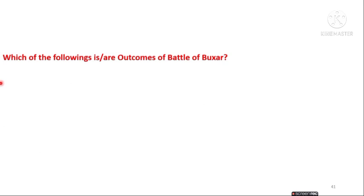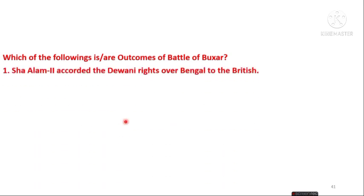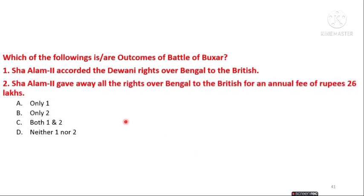The next question is: which of the following are outcomes of the Battle of Buxar? Statement 1: Shah Alam II accorded the Diwani rights over Bengal to the British. Statement 2: Shah Alam II gave away all rights over Bengal to the British for an annual fee of 26 lakh. The answer is option C — both 1 and 2 are correct outcomes. These are the two significant outcomes of the Battle of Buxar. The Plassey and Buxar battles played a vital role in Indian history.